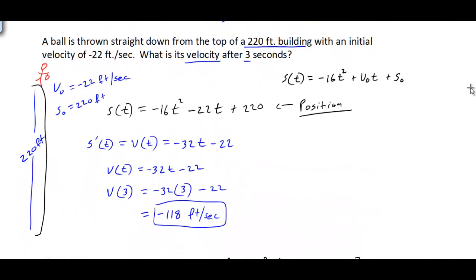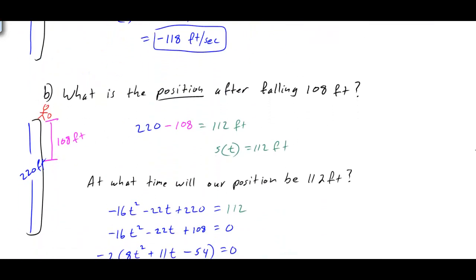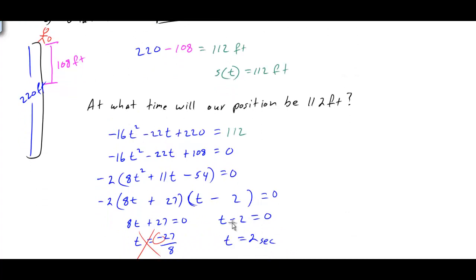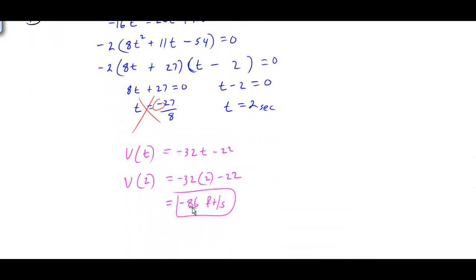To quickly review: if a ball is thrown straight down and we want the velocity after a given time, take the position function, differentiate it to get the velocity function, then substitute the time. For part B — finding the velocity after falling 108 feet — we first determined the position (112 feet), then found the time at which that position occurs (2 seconds), and finally plugged that time into the velocity formula to get the answer.